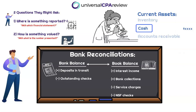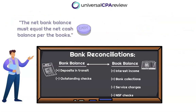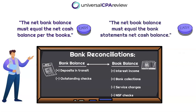The name of the game here is being able to reconcile what is being reported in the books from what is being reported on the bank statements. What the exam wants you to understand is that there are certain adjustments that need to be made in order to tie out the books to the bank statements. We need to know those adjustments inside and out. At the end of the day, the net bank balance must equal the net cash balance per the books, and we're going to simplify this to make it easier.